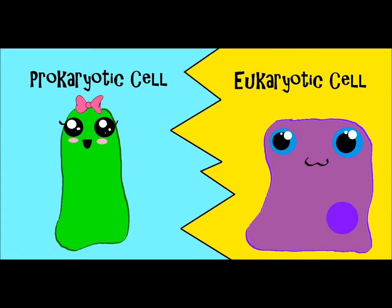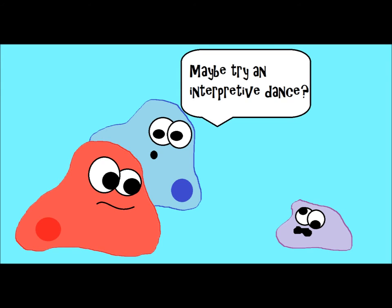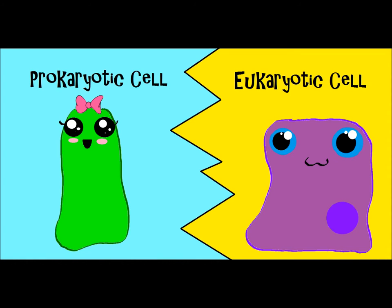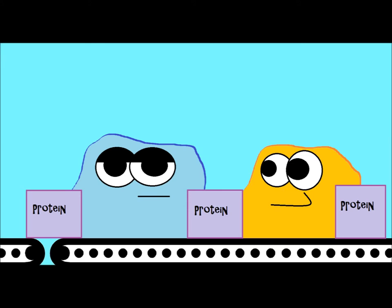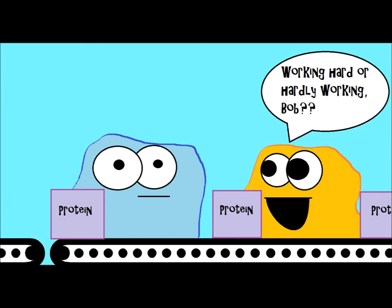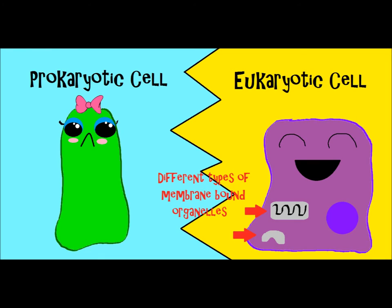Also, both prokaryotes and eukaryotes have genetic material in the form of DNA. They both have this; otherwise, whenever you make more of that type of cell, there would be no way to transmit the genetic information. Prokaryotes and eukaryotes both also have ribosomes, which are tiny little structures that help make protein for the cell. Now, one major difference between prokaryotes and eukaryotes is that eukaryotes have something called membrane-bound organelles.